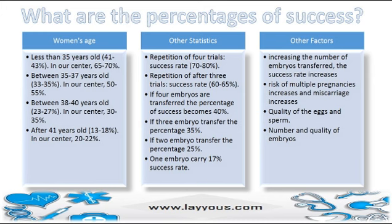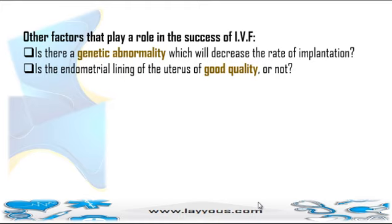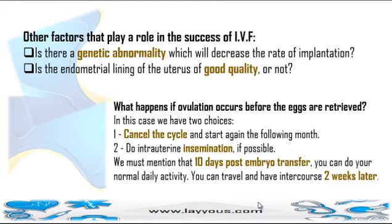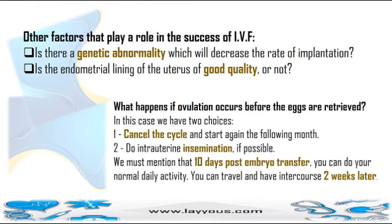A balance should be taken considering factors such as maternal age, previously failed trials, and grades of embryos. Other factors affecting IVF success include whether there is a genetic abnormality that may decrease implantation rate, and whether the endometrial lining of the uterus is of good quality. If ovulation occurs before eggs are retrieved, two choices exist: cancel the cycle and start again the following month, or perform intrauterine insemination if possible.